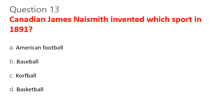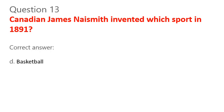Question 13. Canadian James Naismith invented which sport in 1891? A. American Football. B. Baseball. C. Cornball. D. Basketball. Correct answer: D. Basketball.